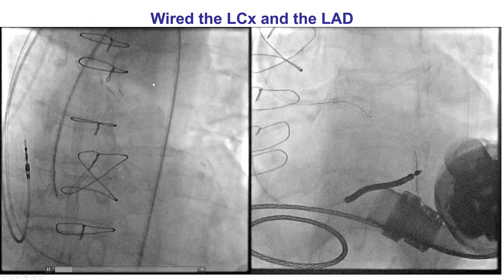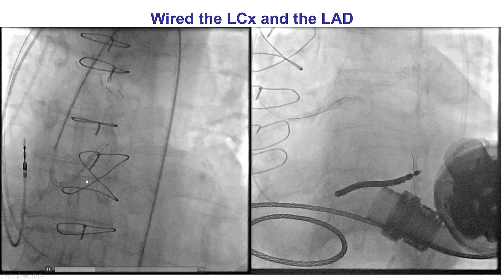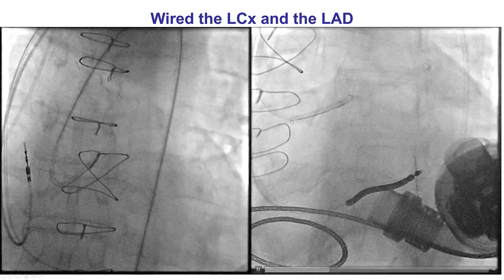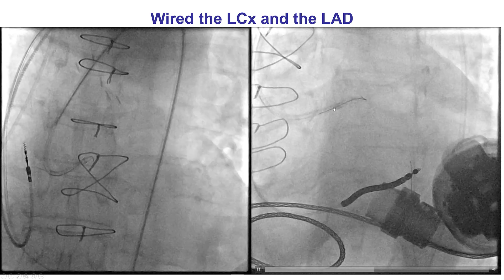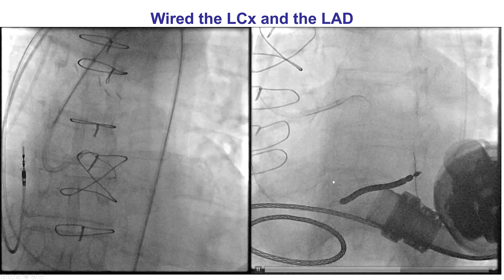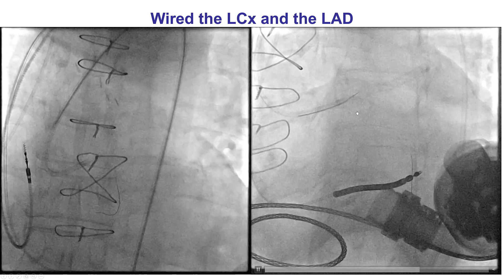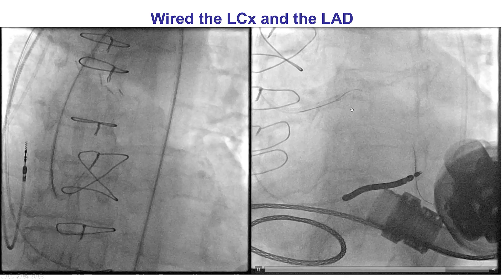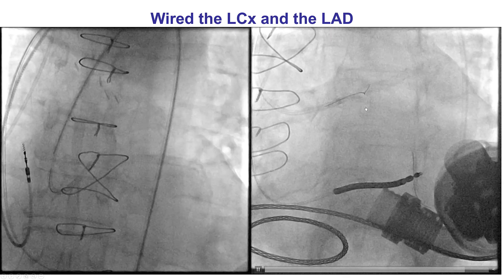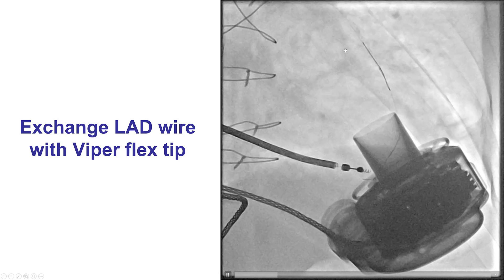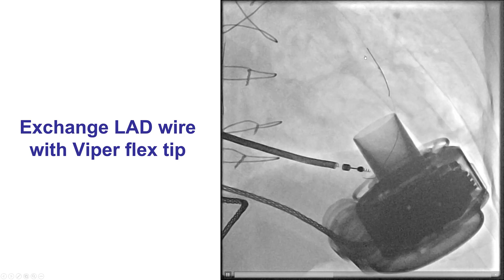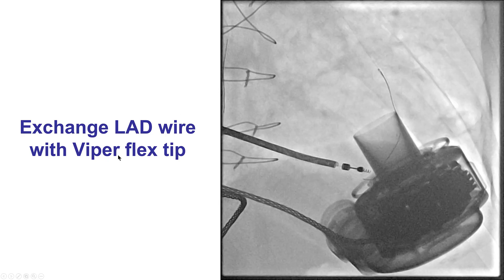Eventually we were able to advance a guide catheter through a new sheath, and then advanced a workhorse guide wire into the LAD and the circumflex. It is important to not use polymer-jacketed wires once there is dissection, because these are more likely to go within the dissection plane instead of crossing into the distal true lumen. The workhorse LAD wire was then exchanged for an atherectomy device because of significant calcification, and we inserted the Viper flex-tip guide wire for multiple rounds of orbital atherectomy after removing the circumflex wire.